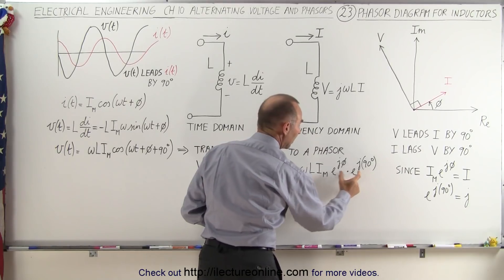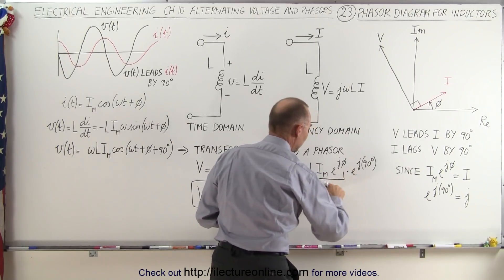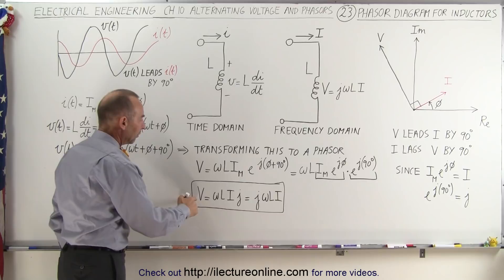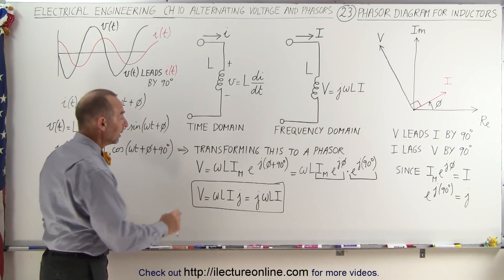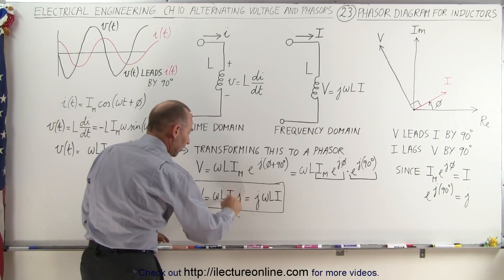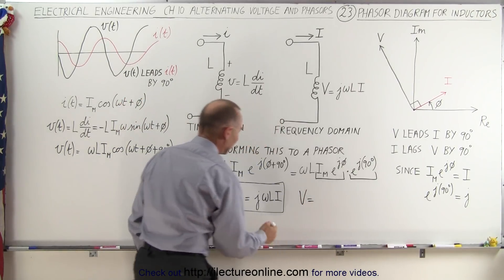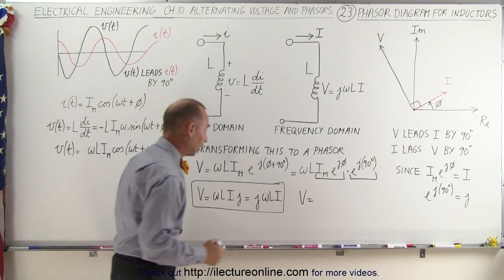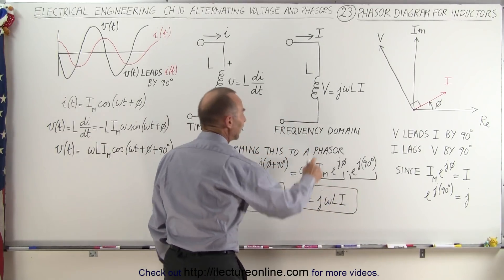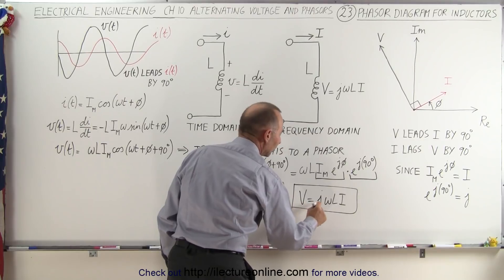Replacing e to the j times 90 degrees with j, and I_max times e to the j phi with the phasor I, we now have an expression for the voltage in the frequency domain equal to omega L times j times I. Most textbooks prefer to write j first, so we write V equals j times omega L times I. This is the relationship of voltage in the frequency domain as a function of current in the frequency domain: V equals j omega L times I.